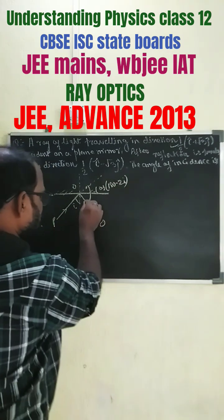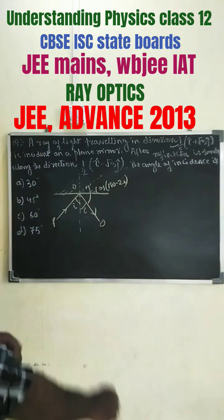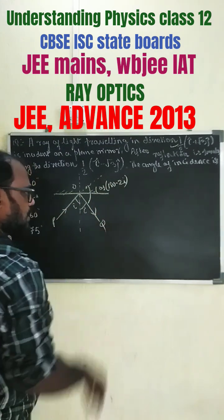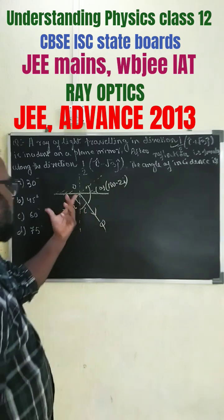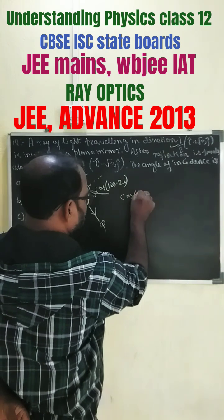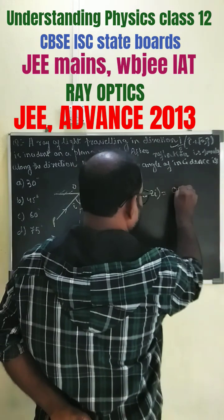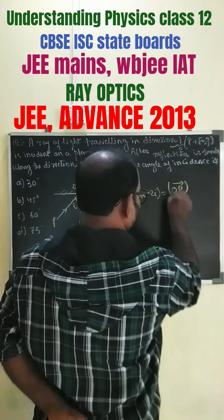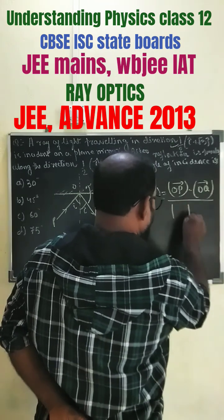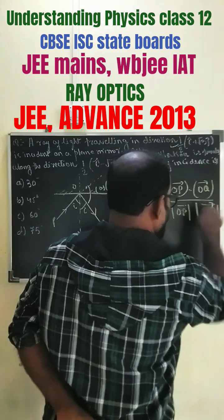Since angle of incidence equals angle of reflection, we can also write r here. Now we have to find out the angle of incidence, so we can find the dot product of the incident and the reflected ray: cos(180 minus 2i) equals OP dot OQ divided by mod of OP times mod of OQ.